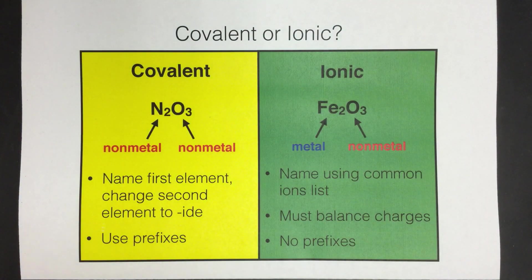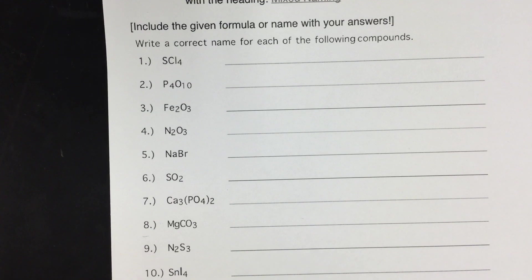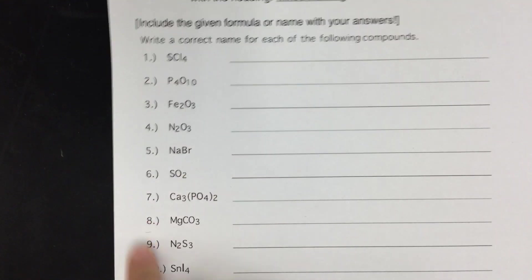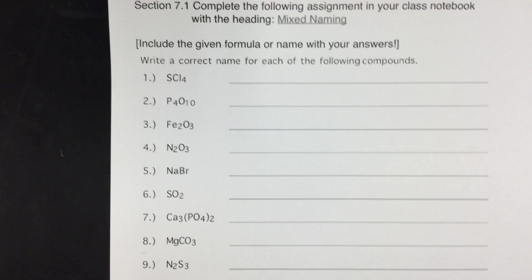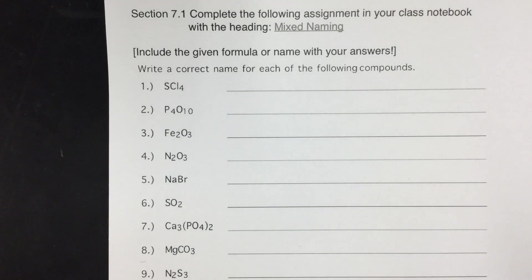Or if it's two ions from your ion list, a cation and an anion. So we're just going to go through a couple of these and label them as either covalent or ionic, and I'm just going to label it on the margin here. This would be something that would be really good for you to do on quizzes or tests or on your homework before you go into naming something, just to make sure you're using the correct rules.